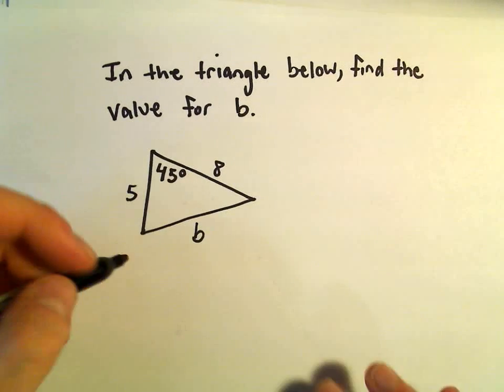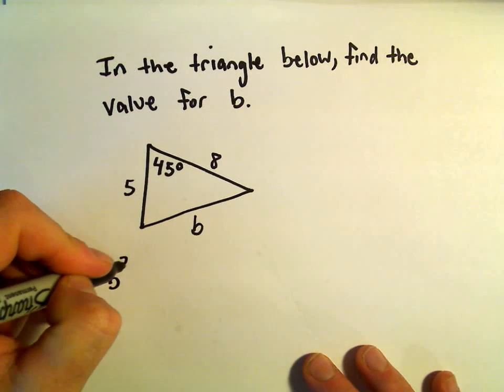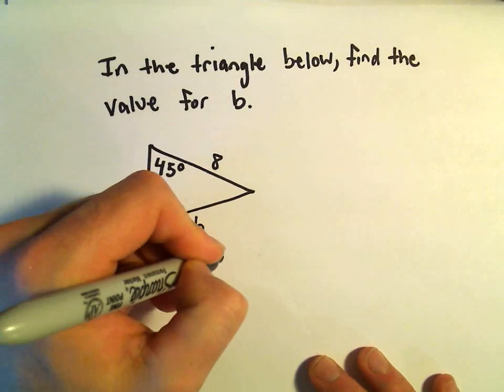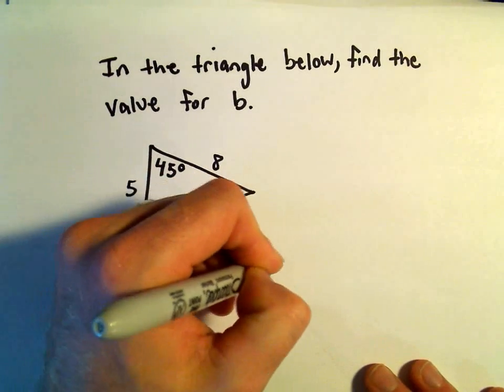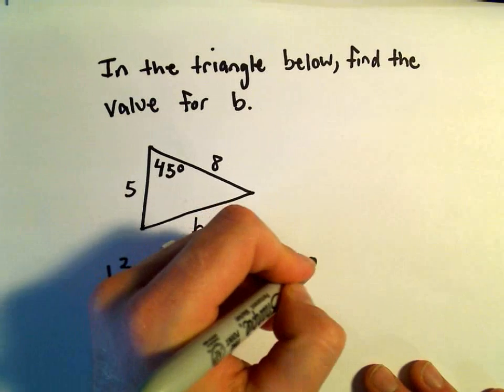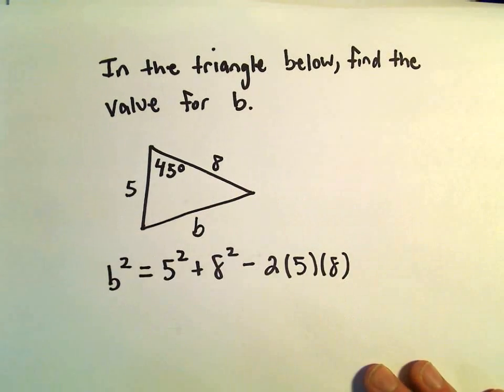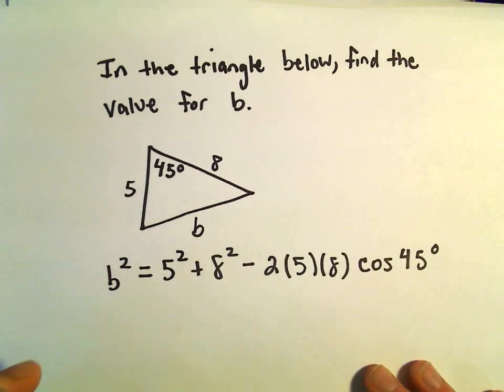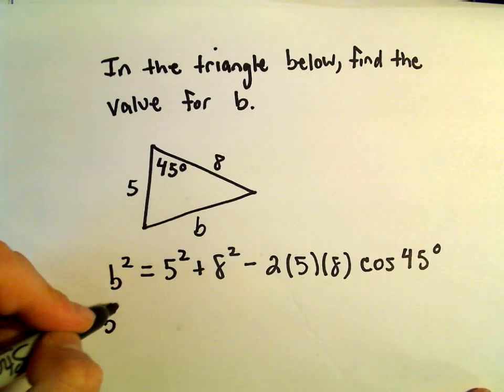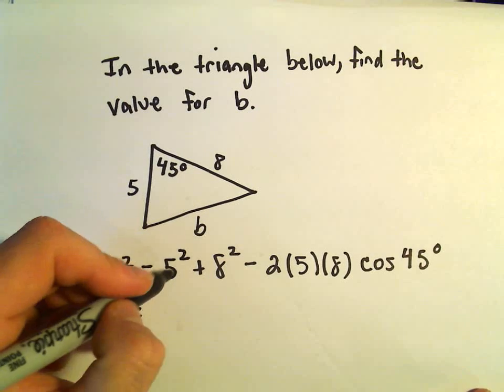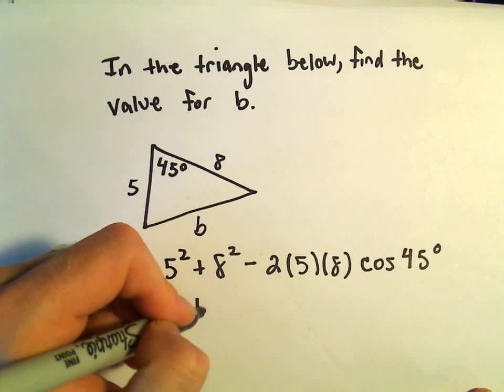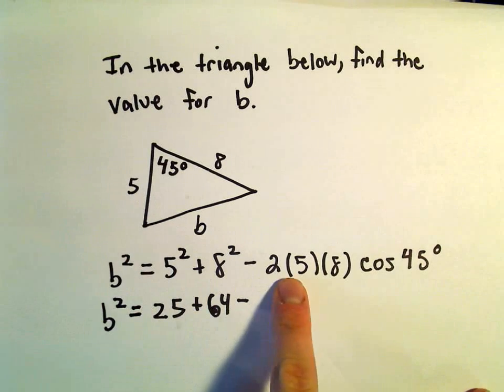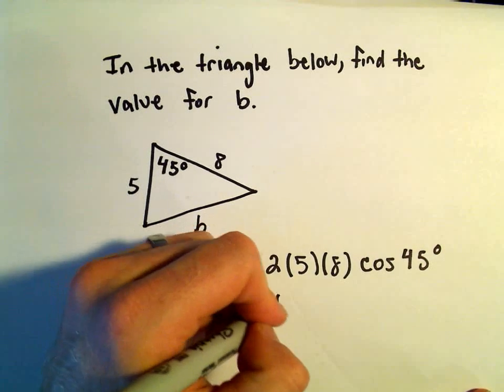So, according to the law of cosines, it says that b squared would equal 5 squared plus 8 squared minus 2 times 5 times 8. And then we would just get cosine of 45 degrees. So, b squared is going to equal, 5 squared is 25, 8 squared is 64, 2 times 5 is 10, times 8 is going to be 80.